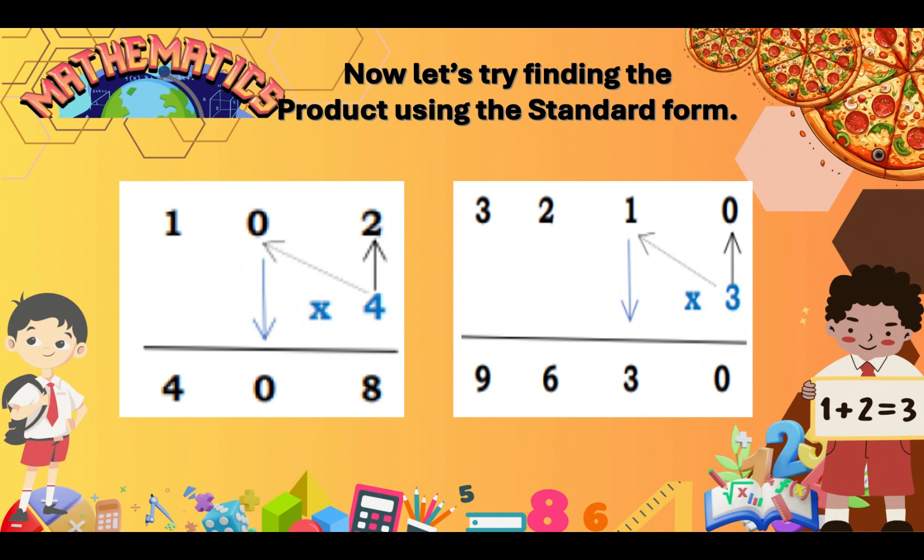This time, let's try finding the product using the standard form. So we have 102 times 4. The first illustration on the left shows 102 times 4. So, first, we follow the arrows. So, number 4 multiplied by 2. So, 4 times 2 that will give us 8. Then, 4 times 0, 4 times 0 equals 0. 4 times 1 equals 4.